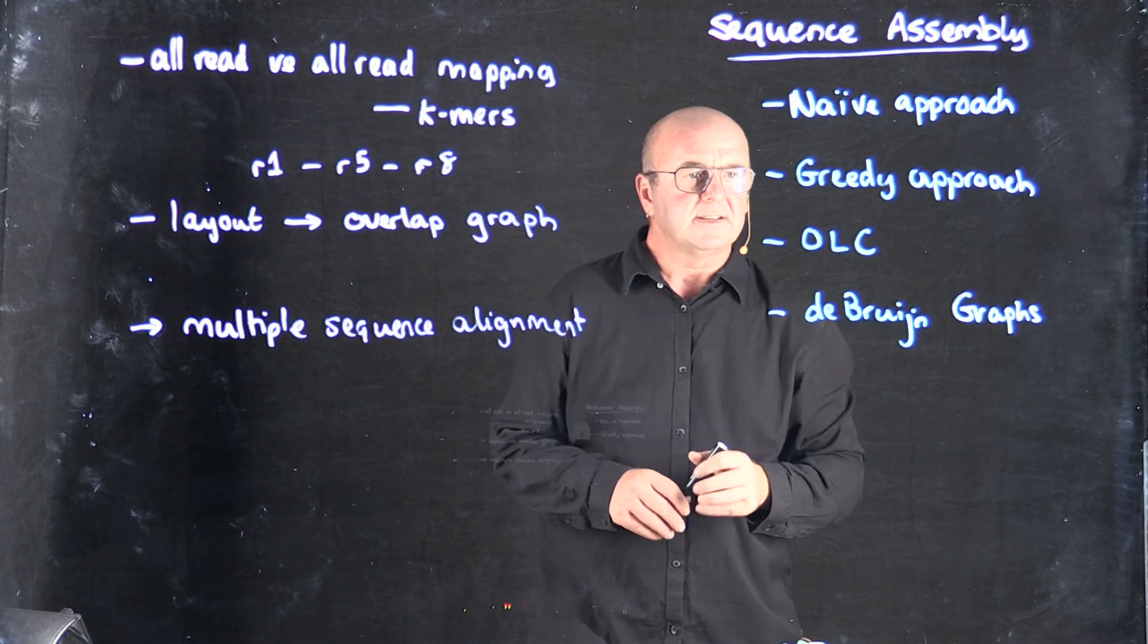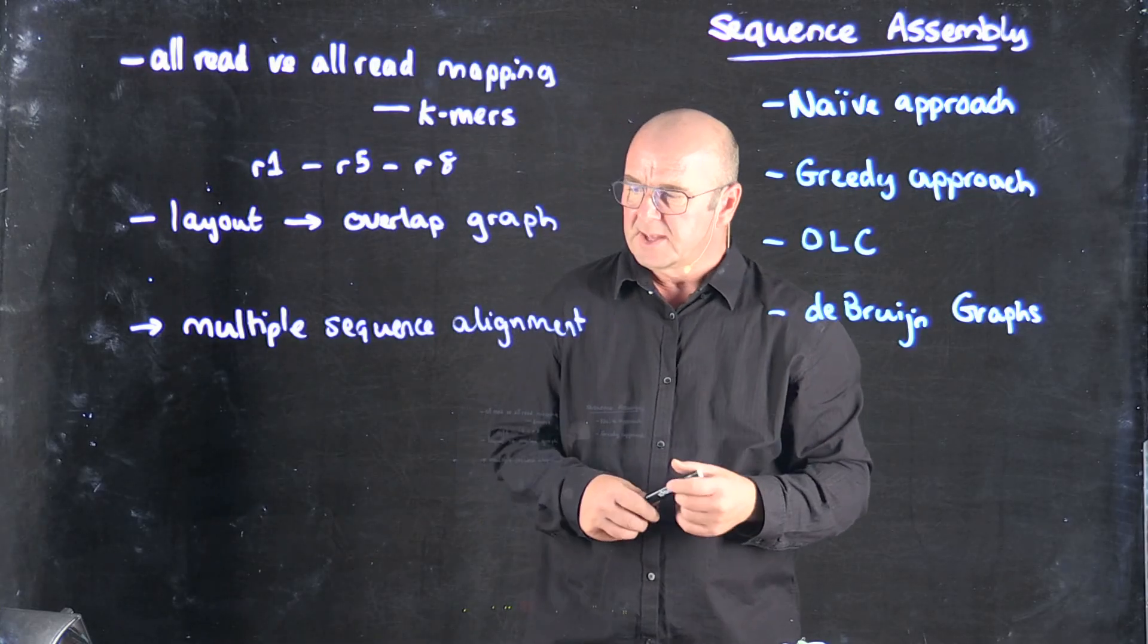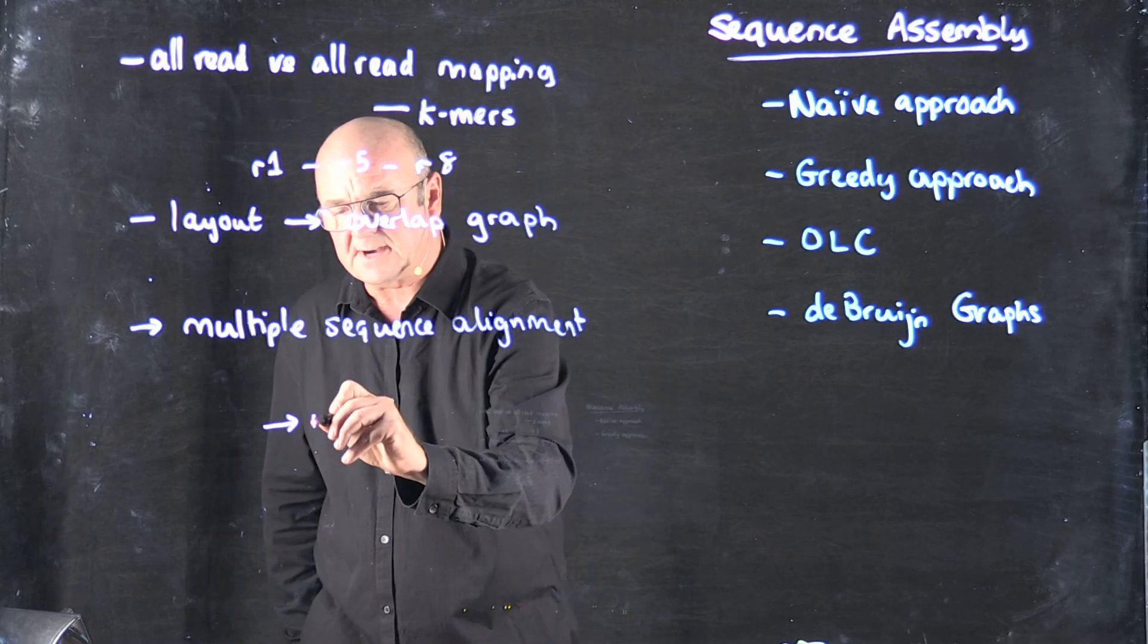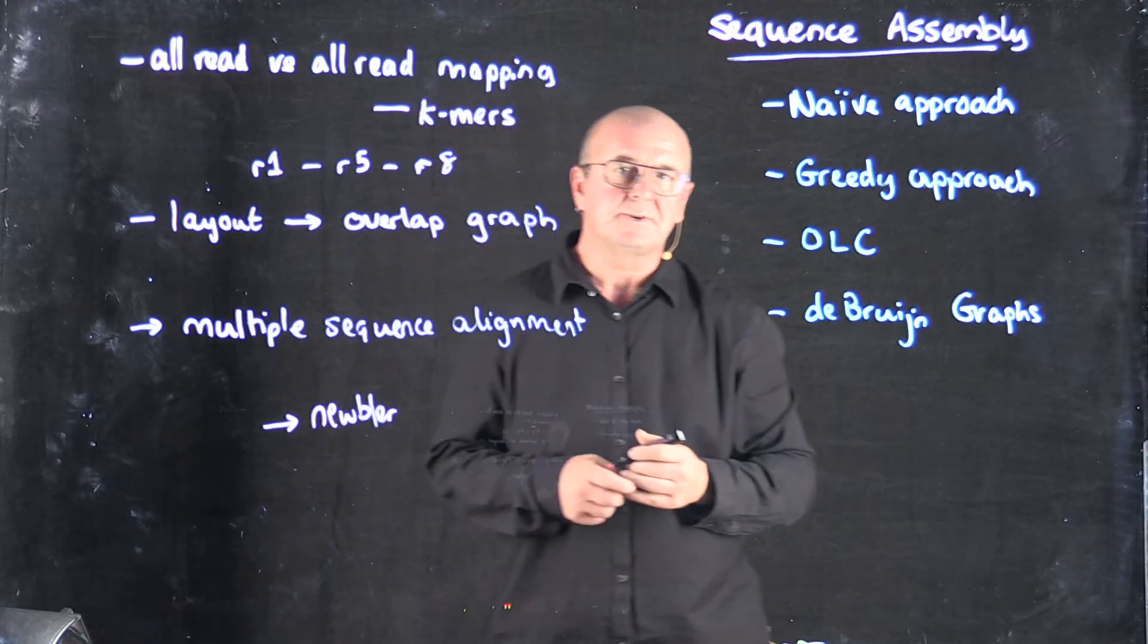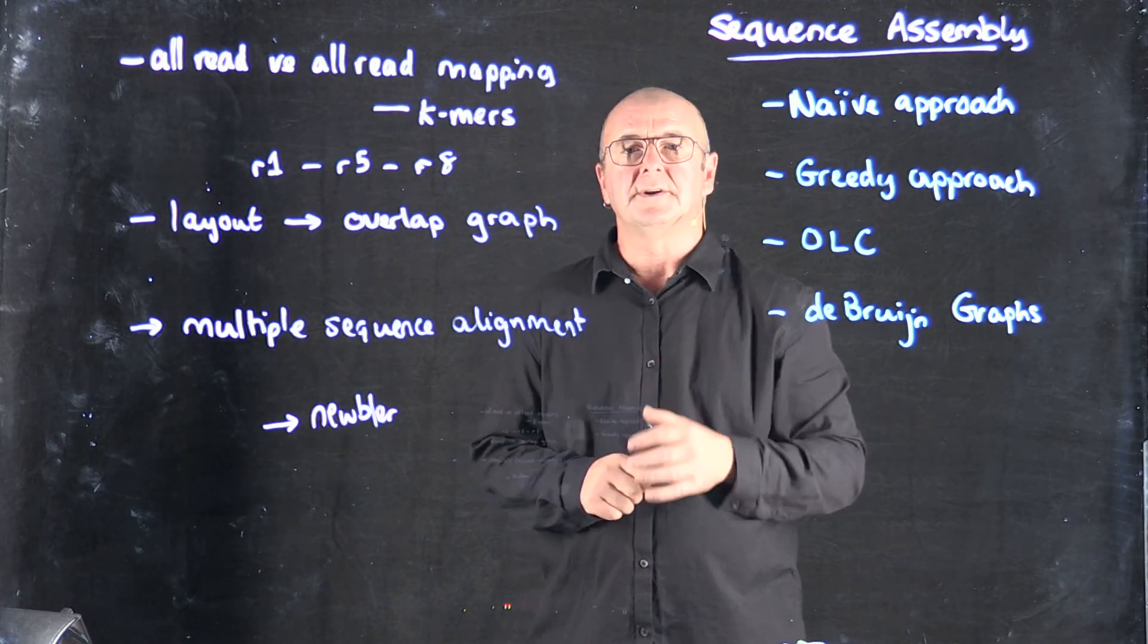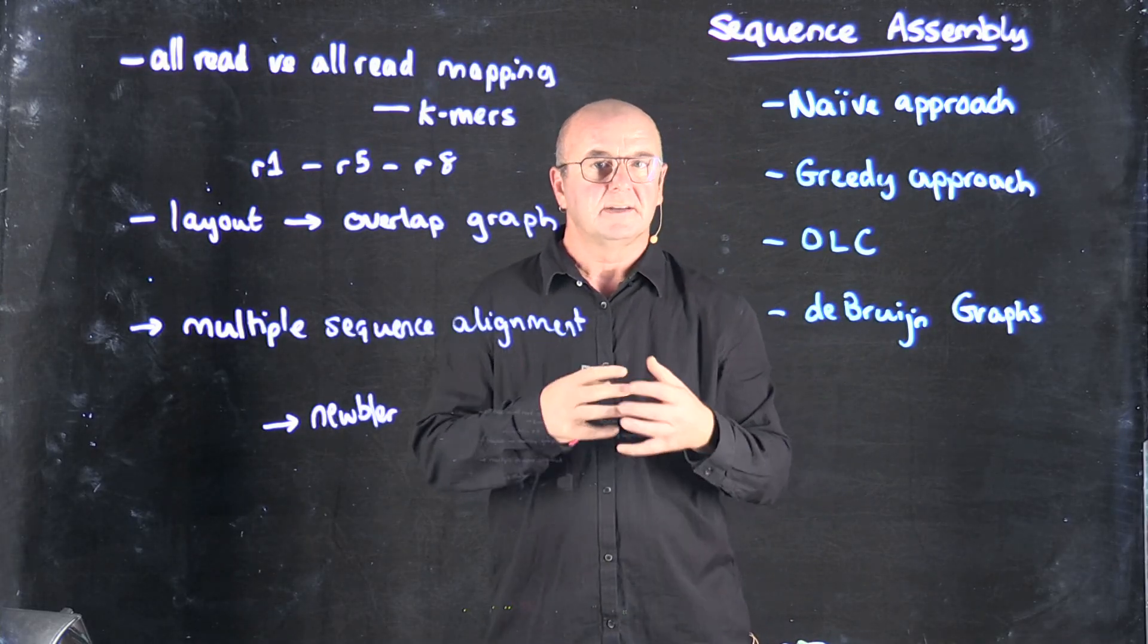Now the overlap layout consensus approach is good, especially if you have longer reads, and there was a piece of software that you can still sometimes find around called Newbler that was released by Roche when they had the 454 sequencer. Newbler worked on overlap layout consensus and generated quite strong and robust assemblies.